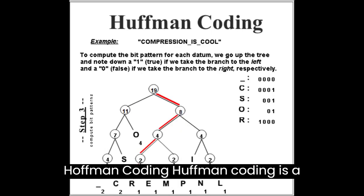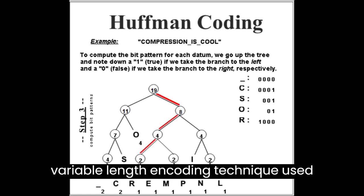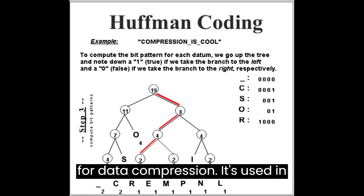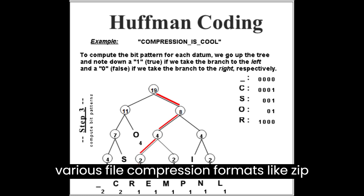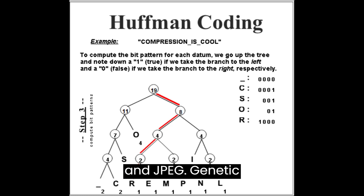Huffman Coding is a variable length encoding technique used for data compression. It's used in various file compression formats, like ZIP and JPEG.